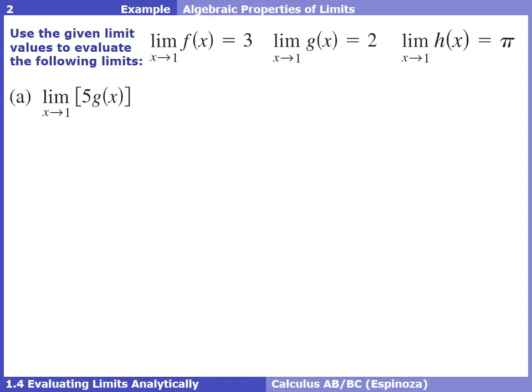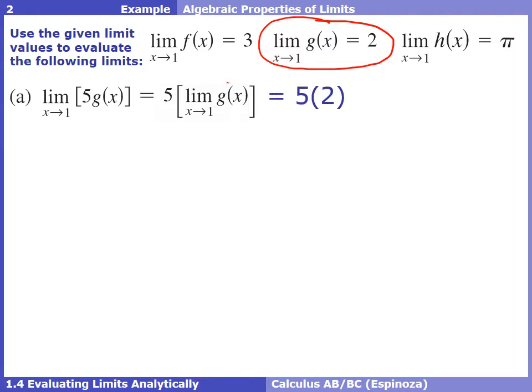In part a, we're asked for the limit as x approaches 1 of 5 times g(x). We don't know that directly, but we know the limit of g equals 2. So we factor the 5 out to the front of the limit, leaving just the limit of g, which equals 2. Then we multiply 5 by 2 to get 10. These algebraic properties let us find limits that aren't obvious by applying the property first.